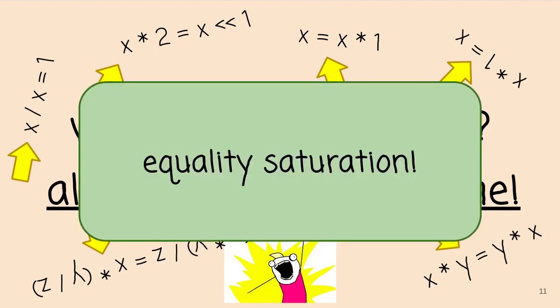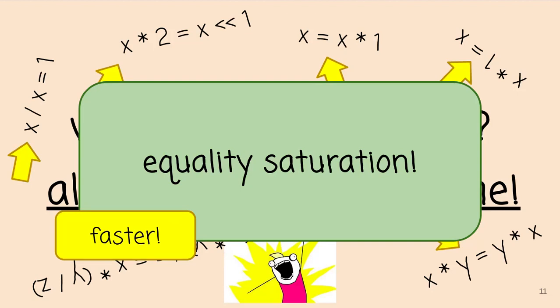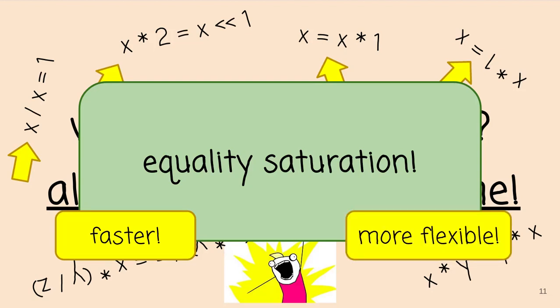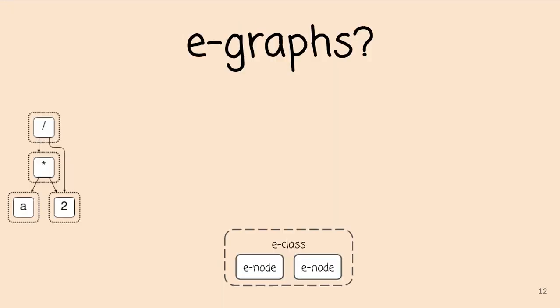Equality saturation is the technique presented by Ross Tate and colleagues in POPL 2009. Our two key contributions on top of equality saturation are going to make it faster — using deferred invariant maintenance — and more flexible — using E-class analyses. But before we talk more about equality saturation, let's talk about E-Graphs, the data structure that underlies equality saturation. They underlie not only equality saturation but also most modern theorem provers; they were invented by Greg Nelson in the 70s, with a similar concept by Dexter Kozen a little earlier.